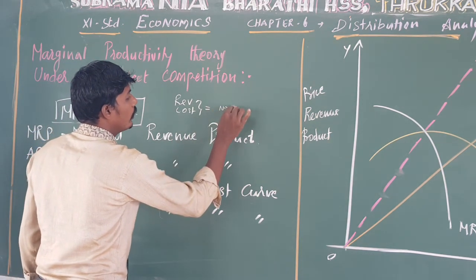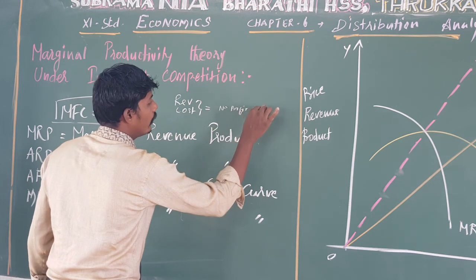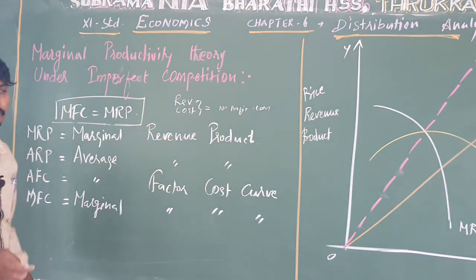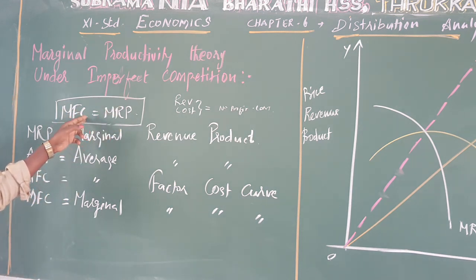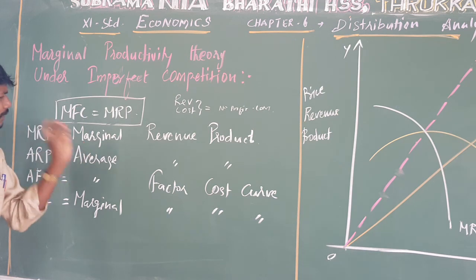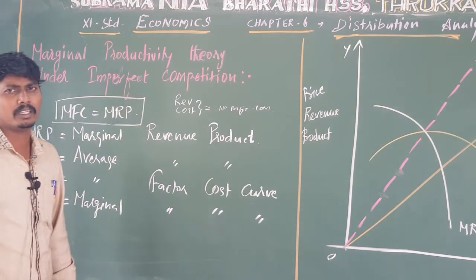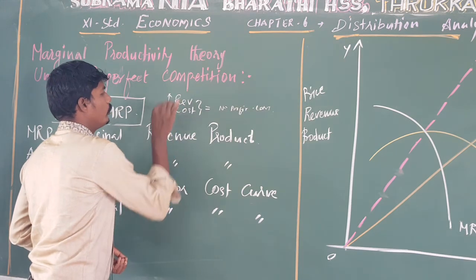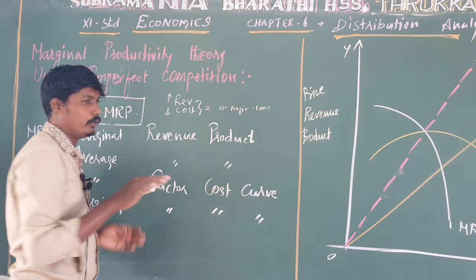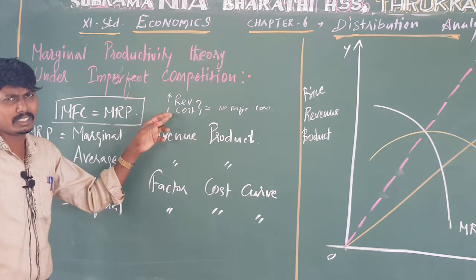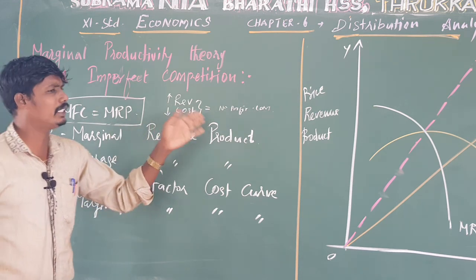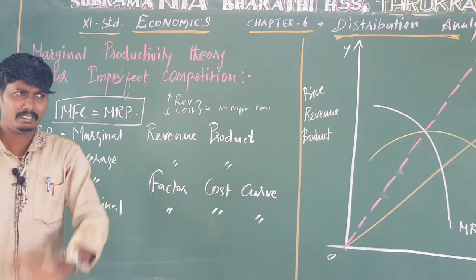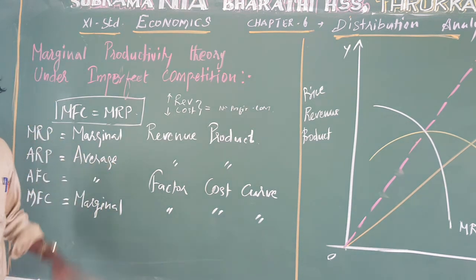No profit and no loss. To maximize profit, expenditure means cost reducing. The revenue and cost are equal — when revenue is close to cost, that is the no profit or no loss condition.